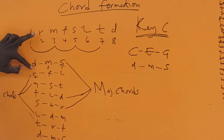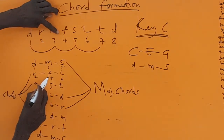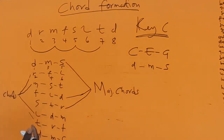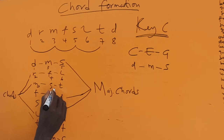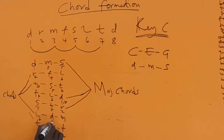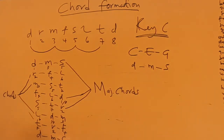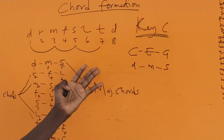So we number the positions: one, three, five for the major chord. Re is two, fa is four, la is six, ti is seven. The chord positions are: one-three-five, two-four-six, three-five-seven, four-six-one (or eight — they're the same), five-seven-two, six-one-three, and seven-two-four.